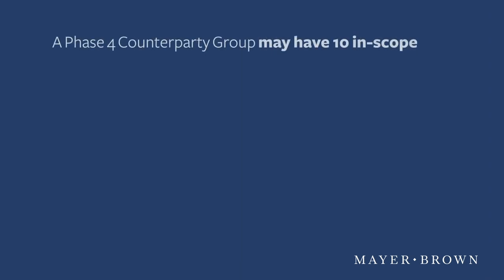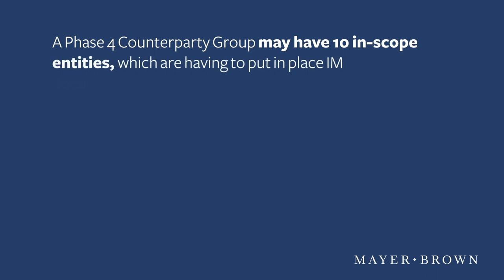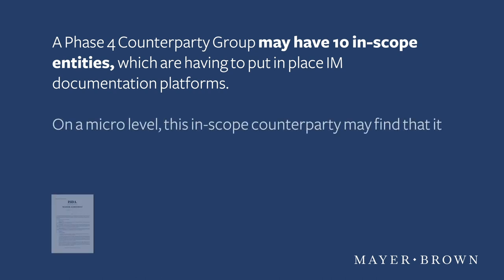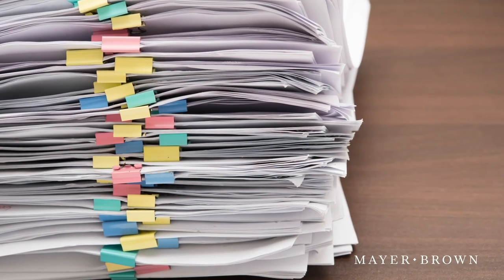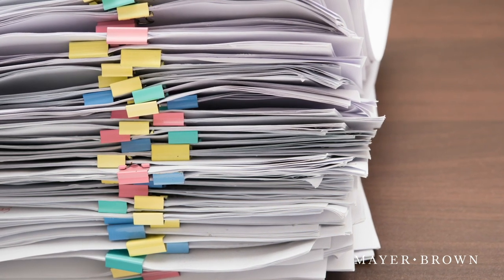The scale of the task of complying with IM segregation requirements can be massive. We have just been through the documentation requirements for a single pairing, but this documentation infrastructure arrangement must be put in place for each pairing between counterparty groups. So a phase four counterparty may have 10 in-scope entities within its counterparty group which are having to put in place IM documentation platforms with other paired counterparties. On a micro level, this in-scope counterparty may find that it has five different ISDA master agreements in place with a phase two counterparty — perhaps a bank in Brazil, an asset manager in Ireland, the parent bank in France and two others. With multiple custodians also potentially appointed, a phase four or phase five in-scope counterparty may find itself putting hundreds of documents in place.